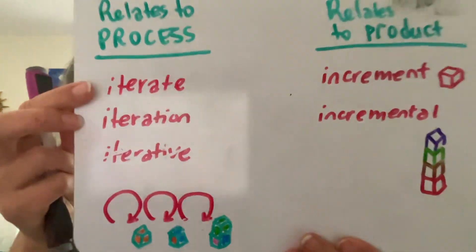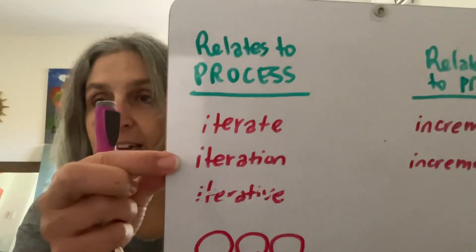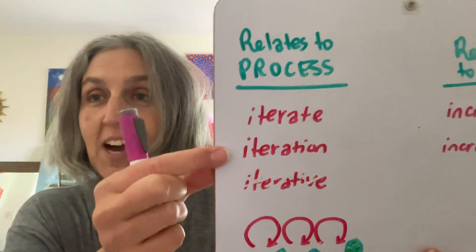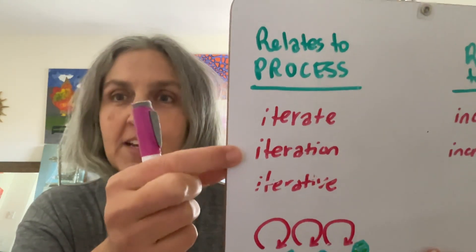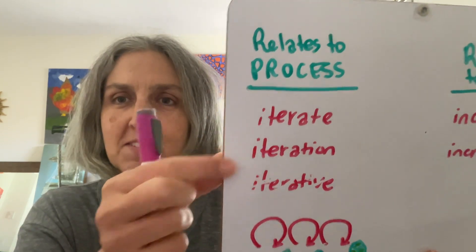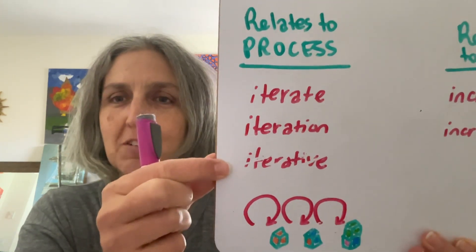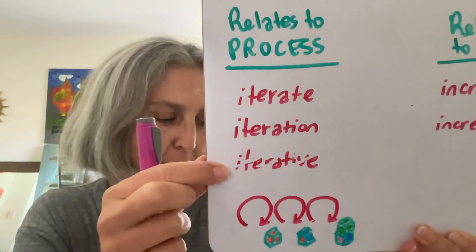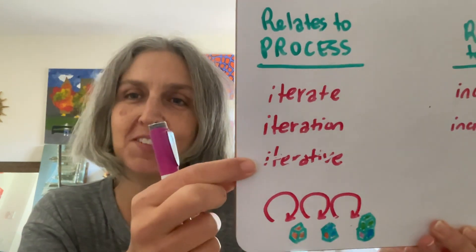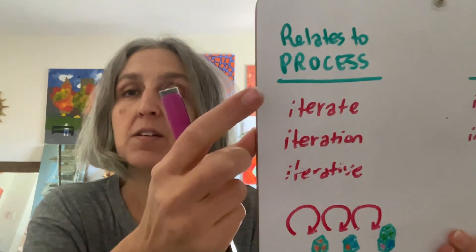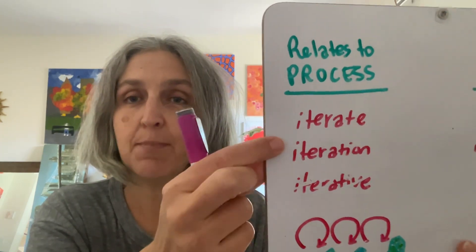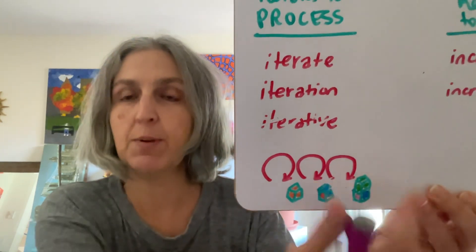I'd like to pause here and talk about some terms. Terms that relate to the process itself: 'iterate' means to repeat. 'Iteration' means I'm using a time box — a set start and a set end. And 'iterative,' which is one of those adaptive approaches, means repeating — repeating over and over.